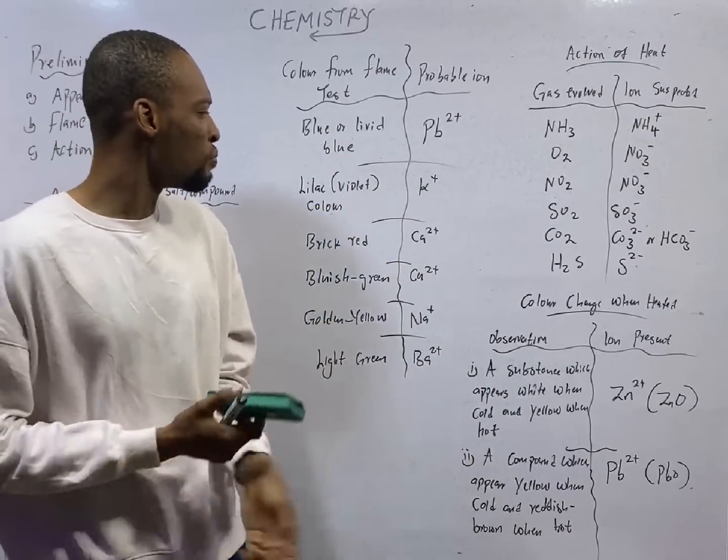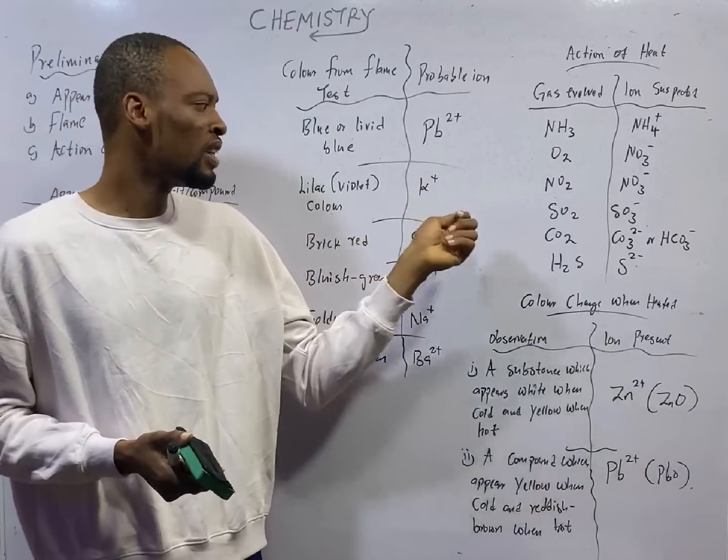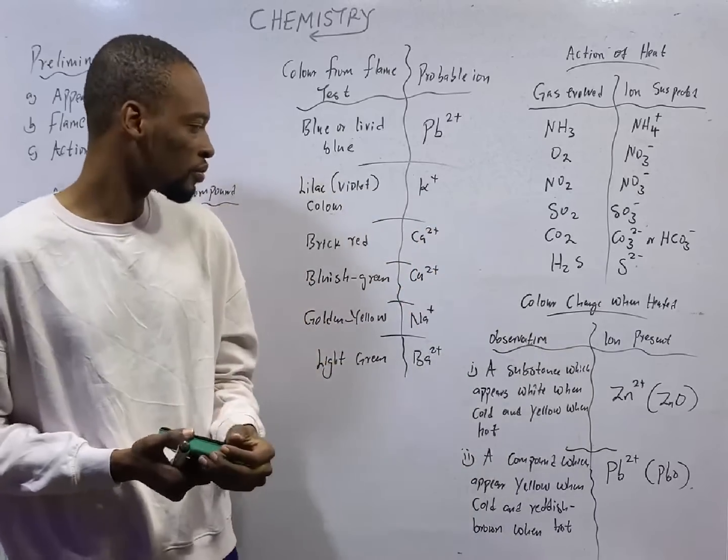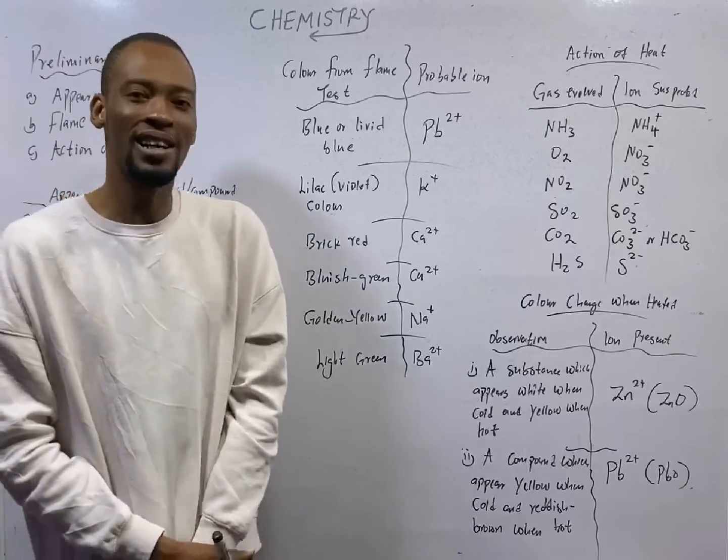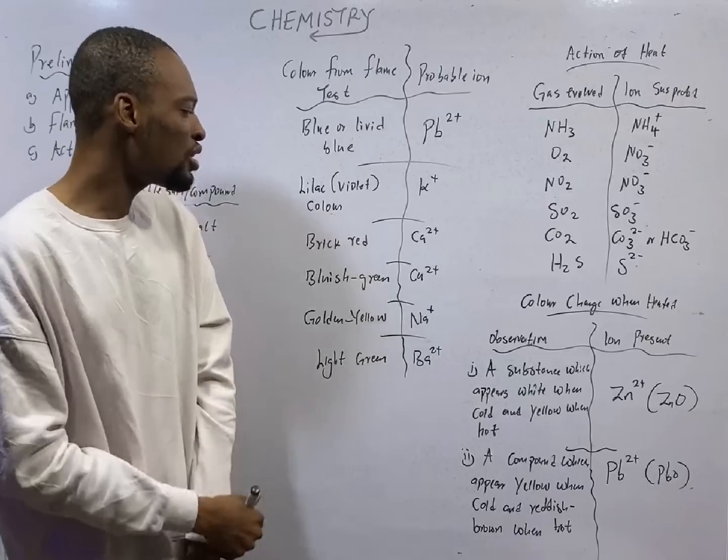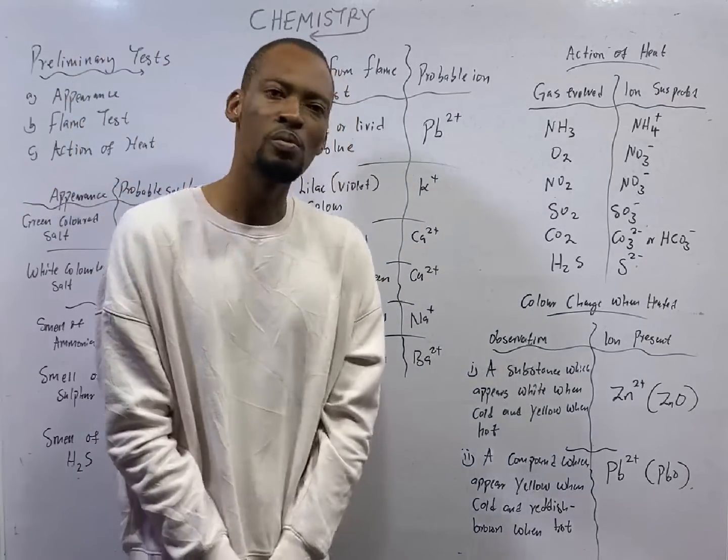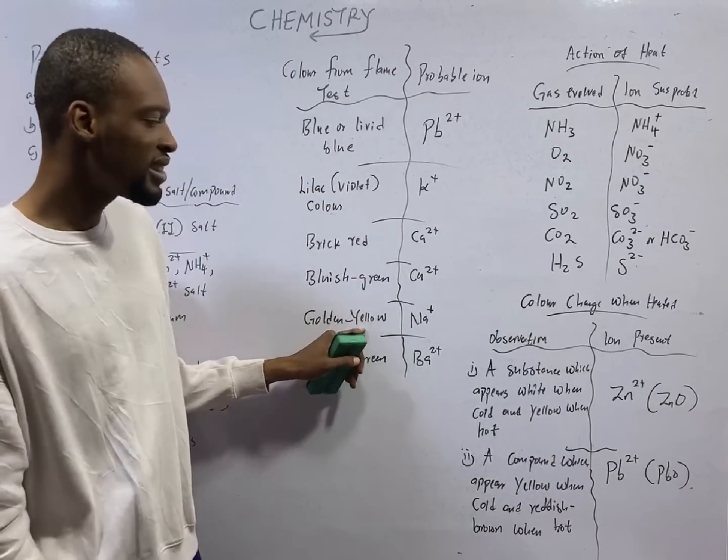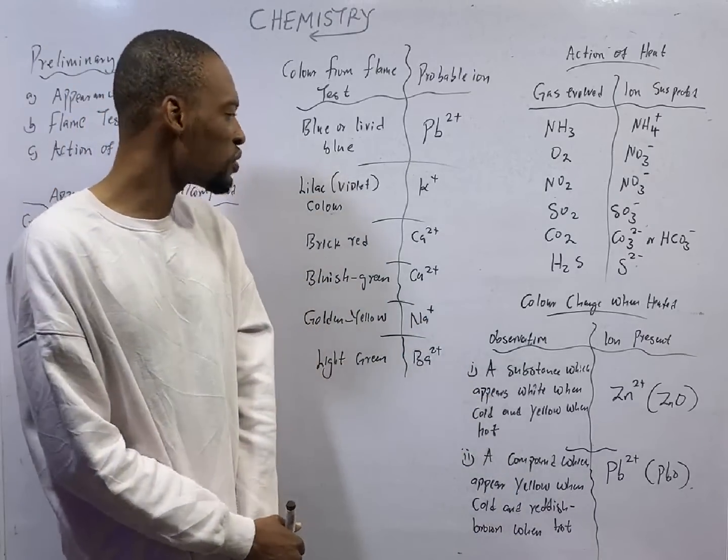If a substance burns with lilac flame or violet color, it is potassium ion. The color of flame for potassium ion is lilac or violet color. And brick red is calcium ion. When you hear it burns with a brick red color, that is calcium ion. And bluish green is copper two ions.